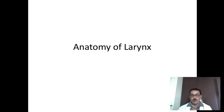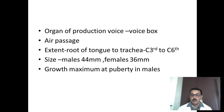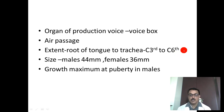Today's class is on anatomy of the larynx. The larynx is the organ for production of voice, otherwise called the voice box. It is also a passage for air from the throat into the trachea. The larynx extends from the root of the tongue to the trachea, from C3 to C6 vertebrae. Size varies from 44mm in males to 36mm in females. The growth of the larynx is maximum at puberty, especially in males, causing a sudden change in the clarity of voice.